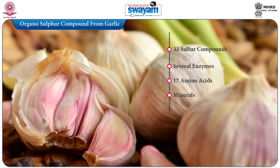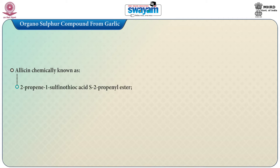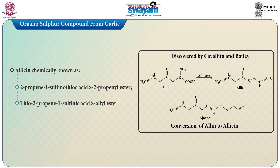Biological effects of garlic are attributed to its characteristic organosulphur compounds. Allicin, the diallyl thiosulphate chemically known as 2-propane-1-sulphenothioic acid S-2-propenyl ester, thio-2-propane-1-sulphenic acid S-allyl ester, was discovered by Cavalito and Bailey in 1944 and is responsible for garlic's typical pungent smell.